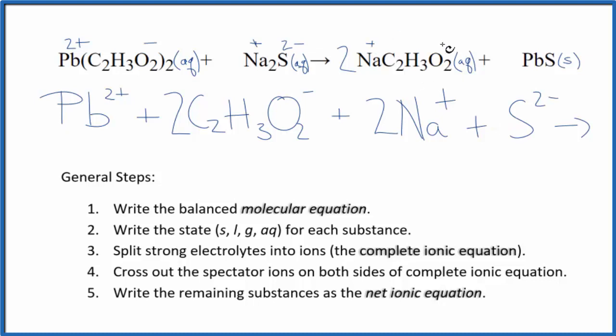Products: we have the positive sodium, the whole acetate here is negative, so we have two sodium ions just like in the reactants, and then we have two of the acetate ions. And then with net ionic equations, we don't split solids apart, so we have just PbS.